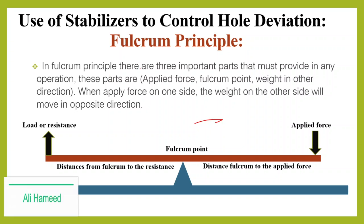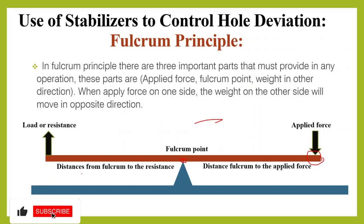In the Fulcrum principle, there are three important parts that must be present in any operation. These are: the applied force on one side, the Fulcrum point in the middle — though it's not required to be exactly in the middle, it depends on the weight on each side — and the weight or resistance on the other side. When force is applied on one side, the weight on the other side moves in the opposite direction. The arm lengths — the distance from Fulcrum to applied force, and from Fulcrum to resistance — affect the outcome.